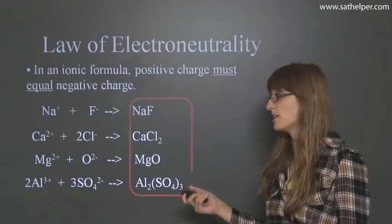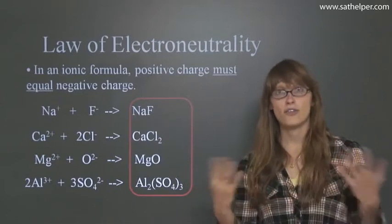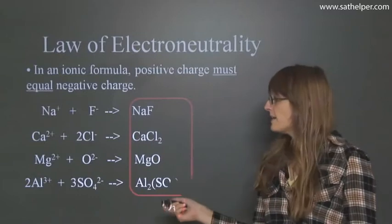The same thing for magnesium and oxygen. Magnesium has a 2+. Oxygen has a 2-. So they're even. So you can just put them together as MgO.